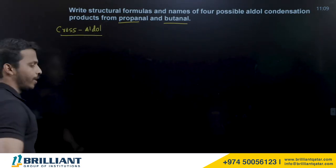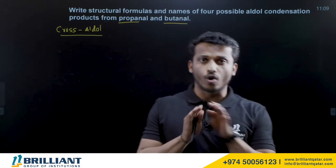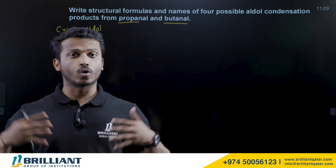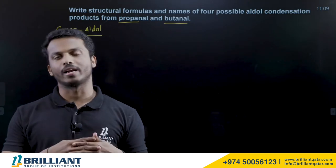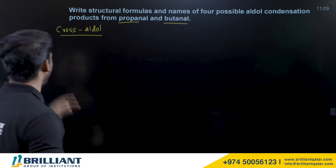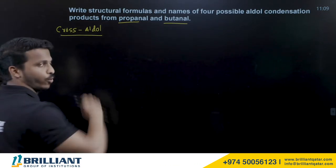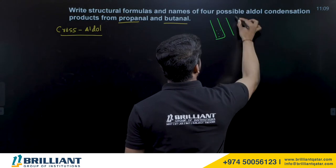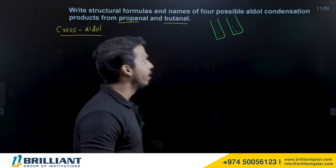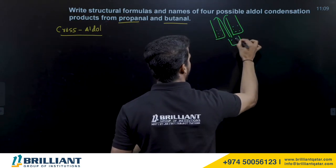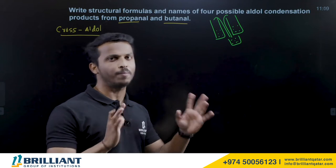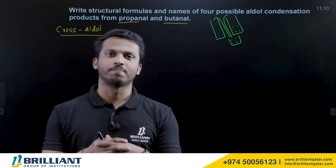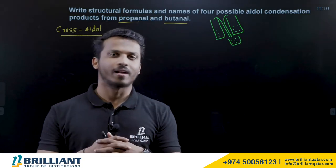Cross aldol condensation: during normal aldol condensation with two identical aldehydes, you get one single product. But cross aldol condensation with two different aldehydes gives four products total. We are mixing propanol and butanol in the same beaker, so the mixture contains both aldehydes.